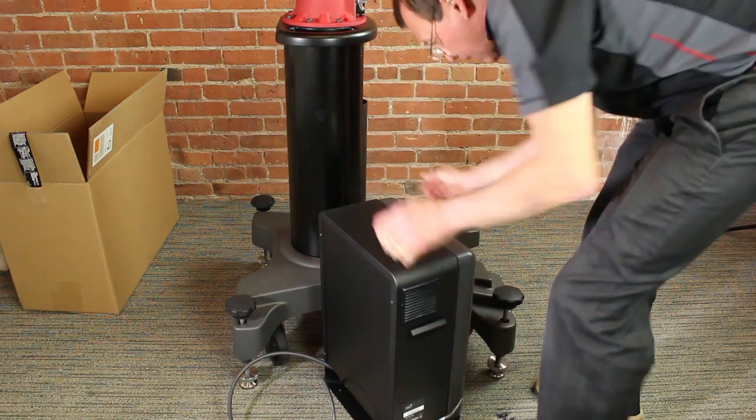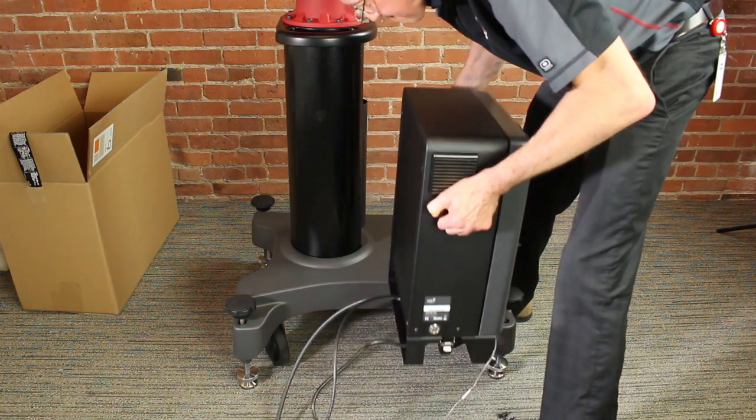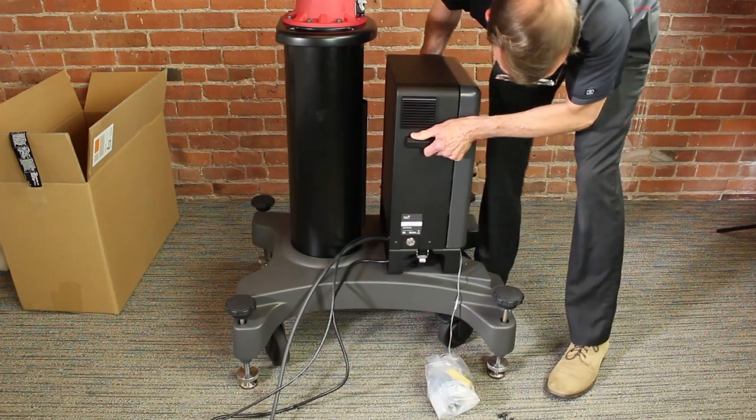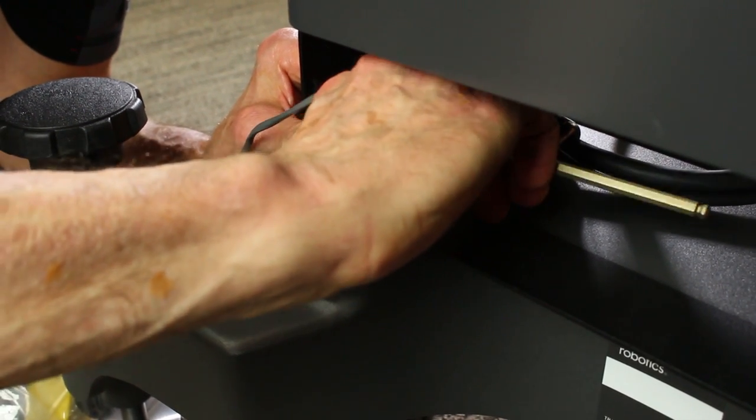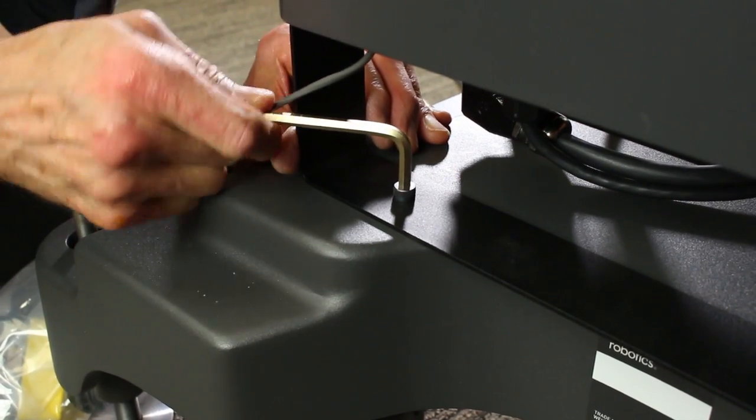If mounting the controller to the pedestal, set the controller upright on the pedestal with the door facing away from the column. Insert and tighten the four 12 millimeter bolts using a 5 millimeter hex key. If you're not mounting it, set it upright on a stable surface.